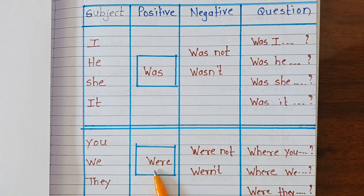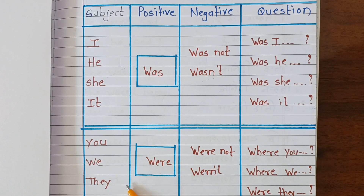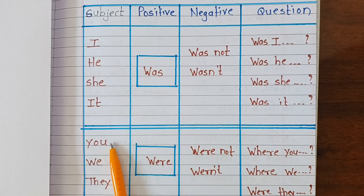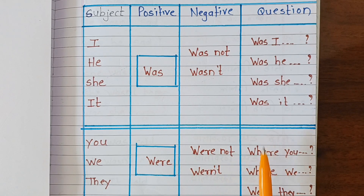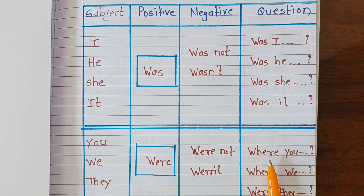This is the lesson: if we use I, he, she, it — we use 'were'? No — you, were; we, were; they, were. In the negative sentence, 'were not' — we use the word you, were; we, were; they, were.